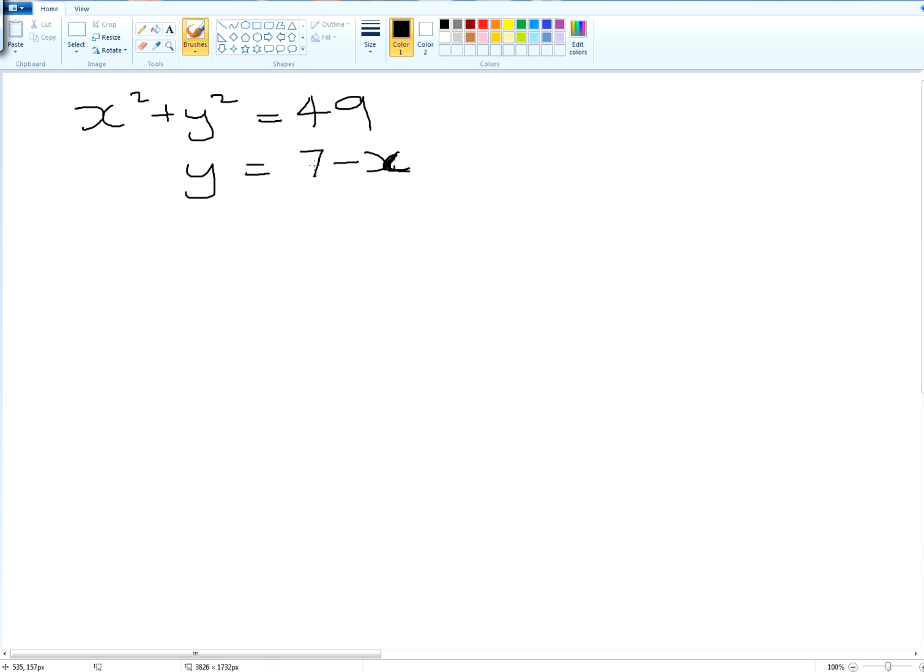Now, we need to solve the simultaneous equation by substituting one of the equations into the other one. So I want to substitute with it because it goes y is equal to 7 minus x. So 7 minus is going to be substituted for the y.